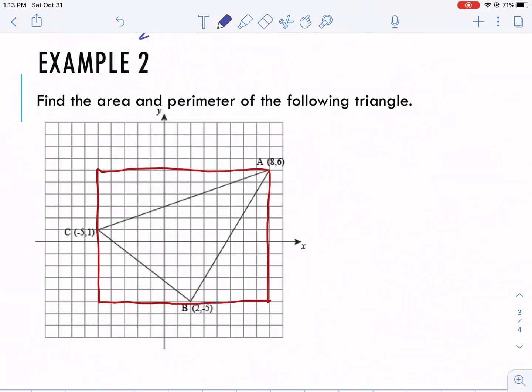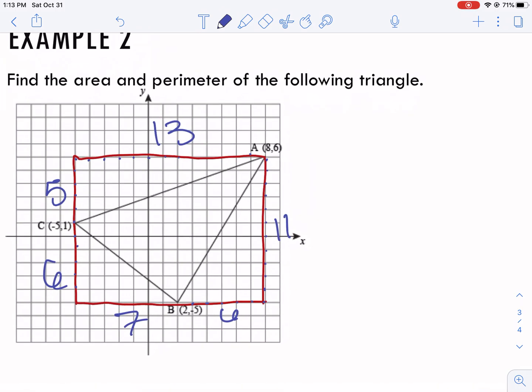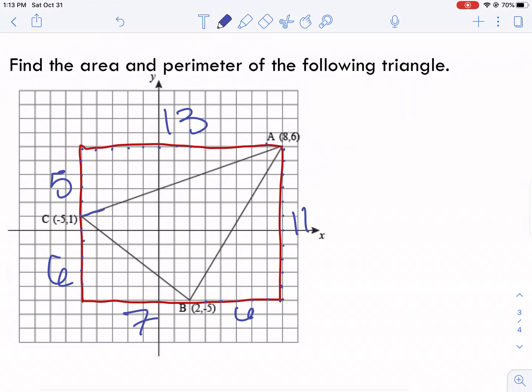I'll label all the sides. So this one's 6, this is 11, this one is 13, this one should be 6, this is 7. So I'm going to start with perimeter.